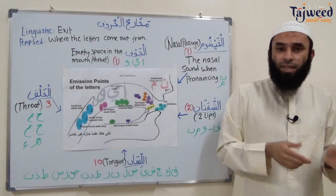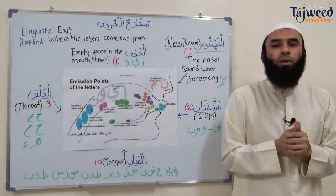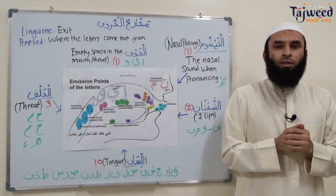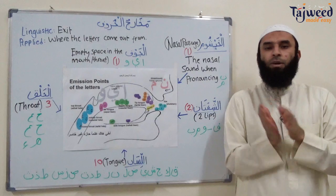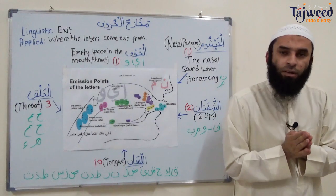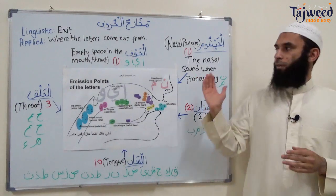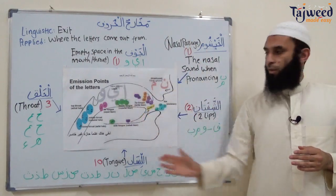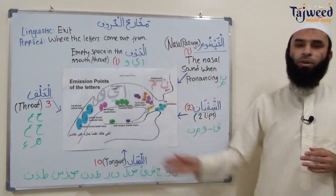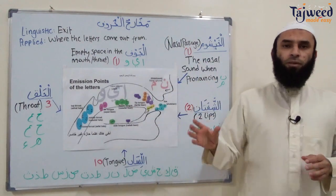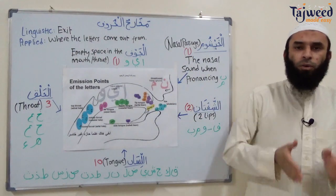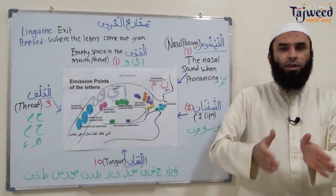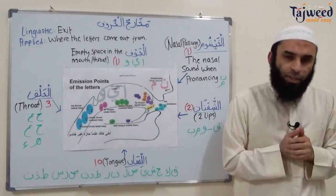Now, we just found out that two letters can have one مَخْرَج point. Two different letters can come out from the same area. Now, we're going to do the summary of مَخَارِجُ الْحُرُوفِ. This is just a summary, and then after that we're going to take each area in more detail.